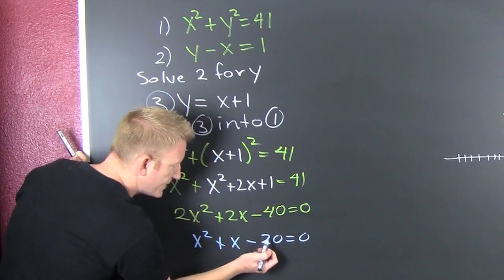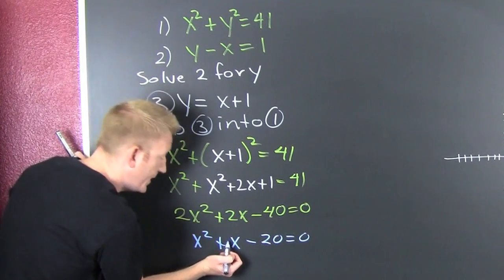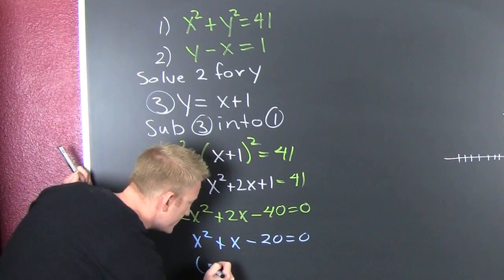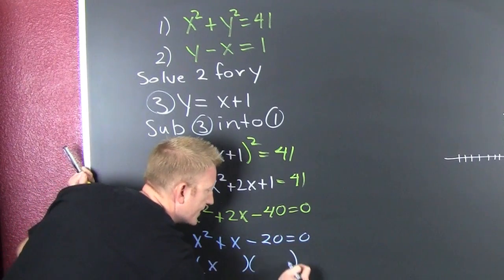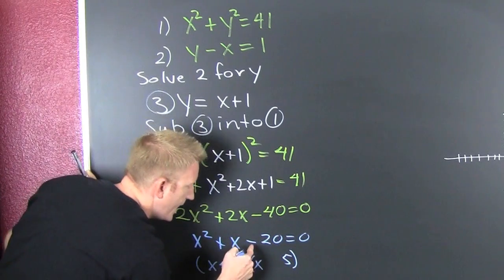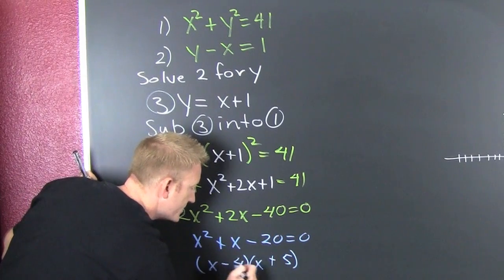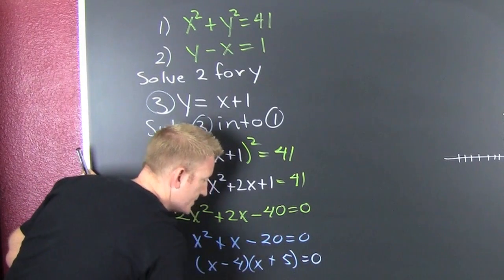Now I'm looking for the factors of 20 that subtract to be 1. Are there any? I bet there are. Got to get that 5 and 4. x and x. The signs are different. The big one is positive. That one's negative. And it's still equal to 0.